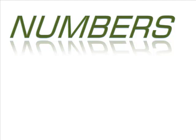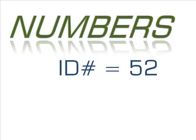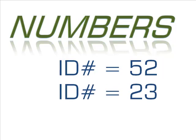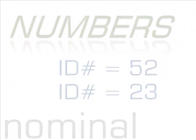The ID column in our data table uses numbers as names. If you have ID number 52, you are not better or worse than the person with 23. It is just an identifier. This usage, called a nominal level of measurement, uses numbers as names.